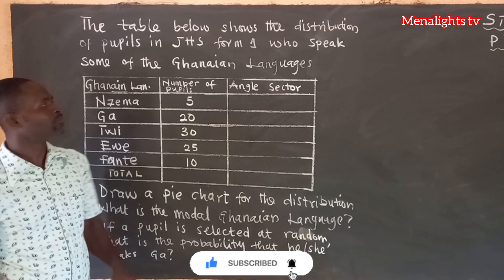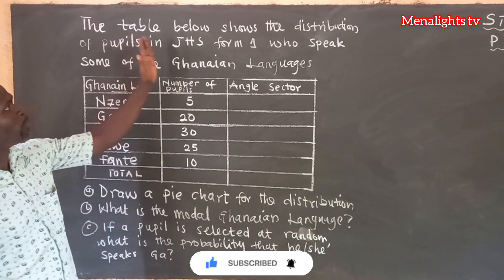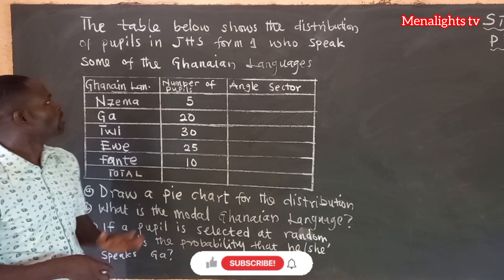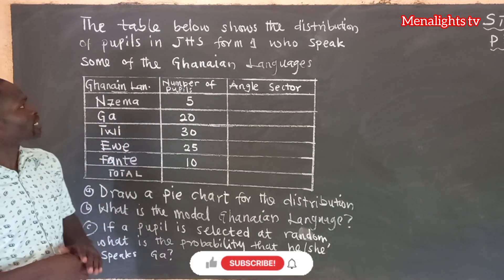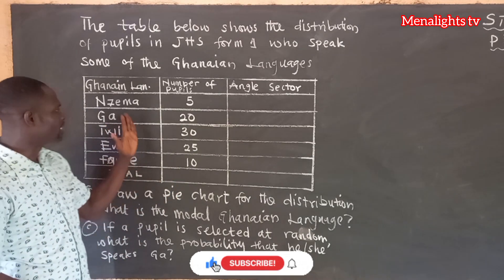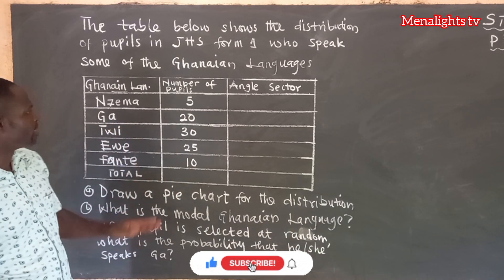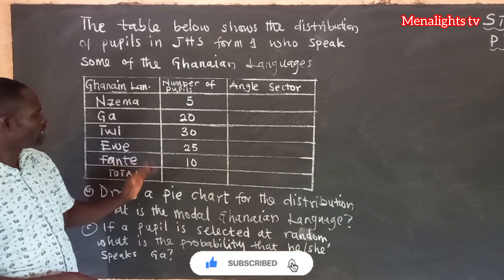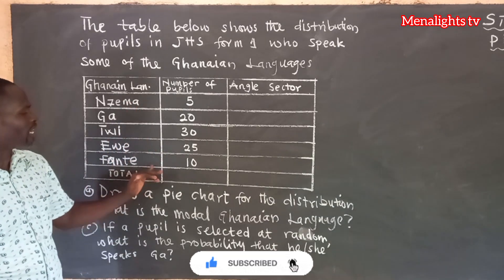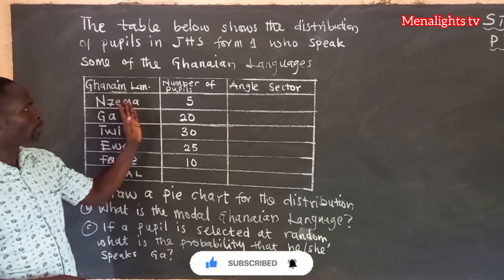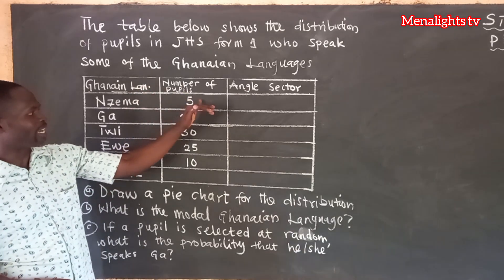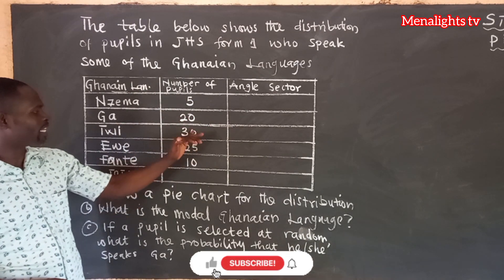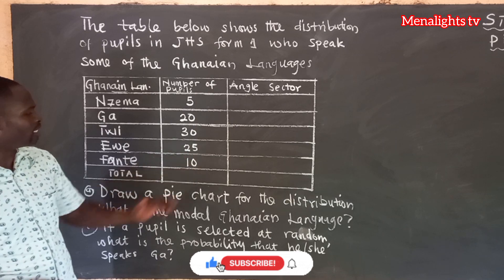The table below shows the distribution of pupils in a Form 1 class who speak some of the Ghanaian languages. These are the Ghanaian languages that they speak: we have Nzema, Ga, Twi, Ewe and Fanti. The number of people who speak Nzema is 5, Ga is 20, Twi is 30, Ewe is 50, and Fanti is 10.